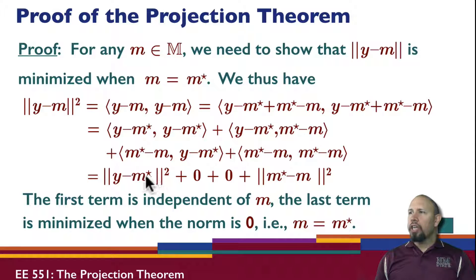If I look at the norm of y minus m, it's equal to the sum of two norms, non-negative quantities. Notice that this term here is independent of m, independent of m. This term is obviously dependent on m.